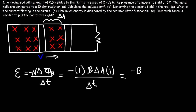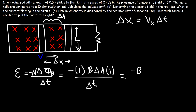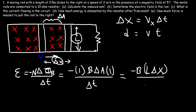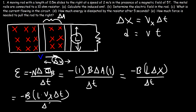What is the change in area in this case? The area is going to be the product of the length of the rod L and the distance that the rod moves, which is delta x — it moves from this location to this location. Delta x, the horizontal displacement, is equal to the horizontal velocity multiplied by the change in time, or d = vt. So the area is L times delta x, and delta x is the velocity times the change in time, so we can cancel delta t.